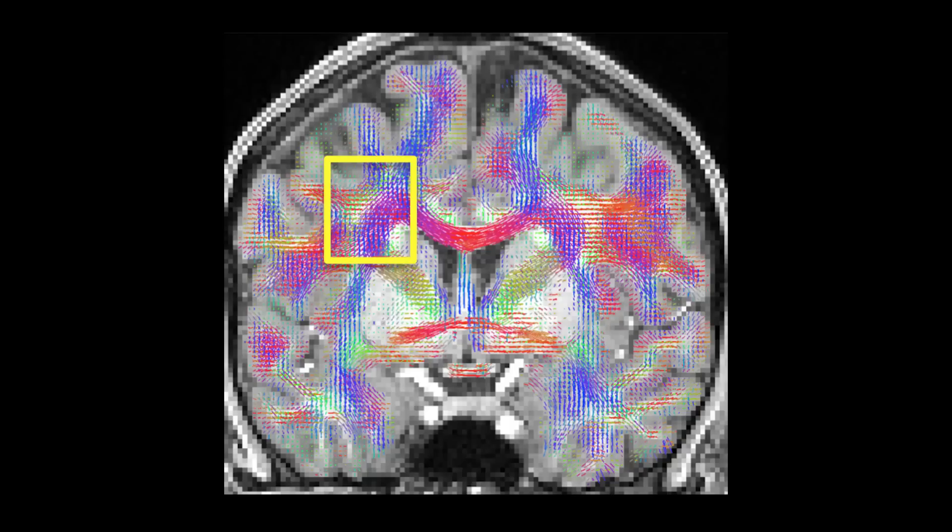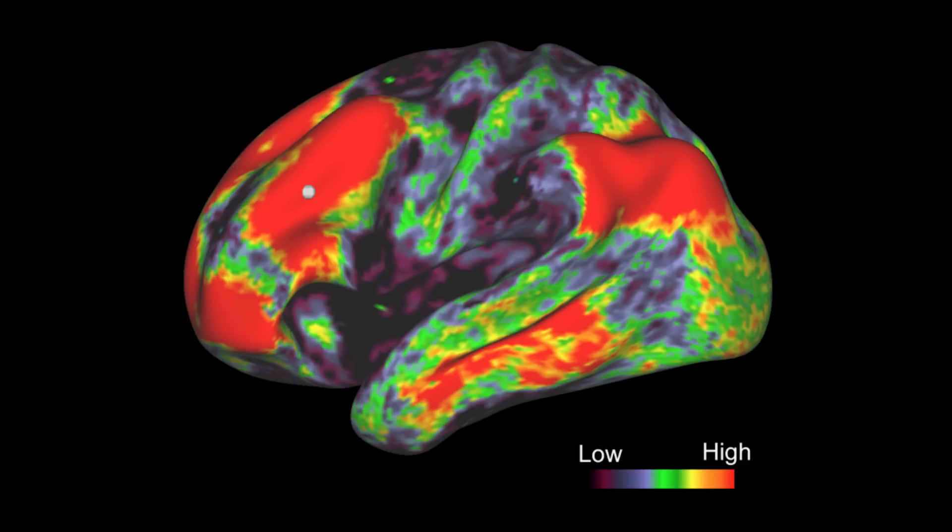We need first to calculate the orientation of the human fibers in each voxel of the brain, and we also need to integrate all this fiber orientation along the entire human brain.